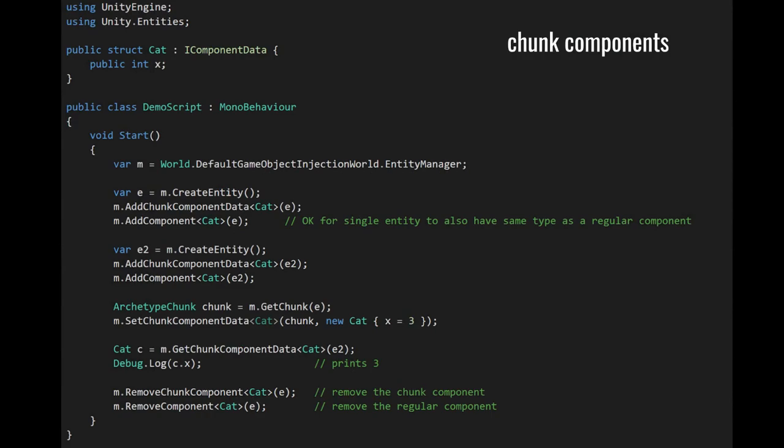A chunk component is pretty much what it sounds like — it's a component that belongs to a chunk itself, not to the entities within a chunk. These chunk components are not defined as distinct kinds of components, just regular IComponentData, but to add a chunk component to an entity, you use addChunkComponentData rather than addComponent. When you add a chunk component to an entity, you're modifying its archetype and thereby determining which chunk it can belong to.